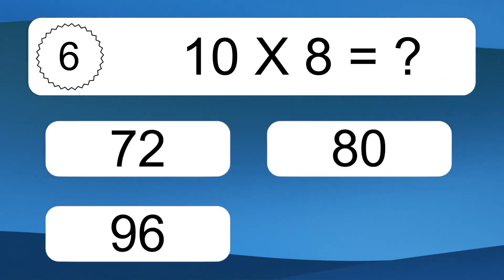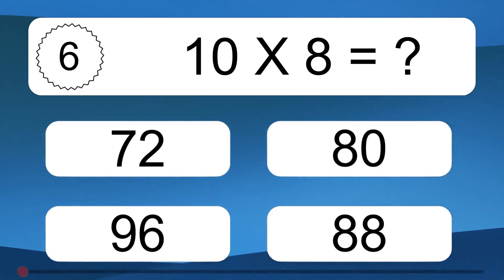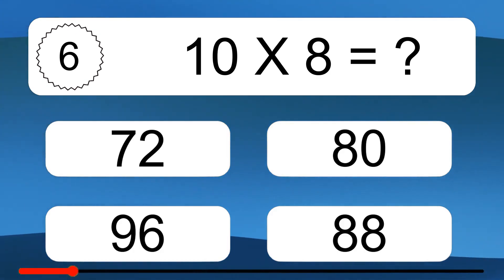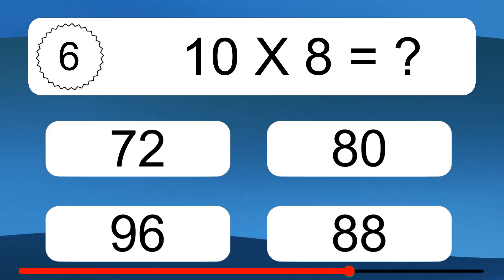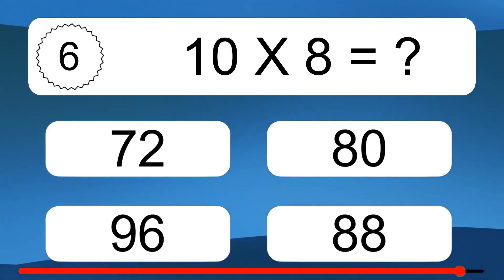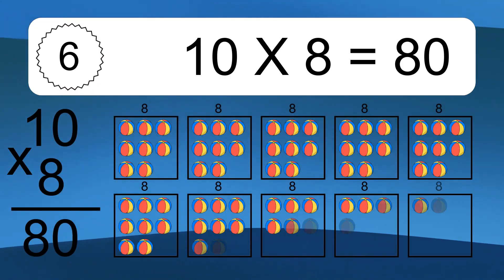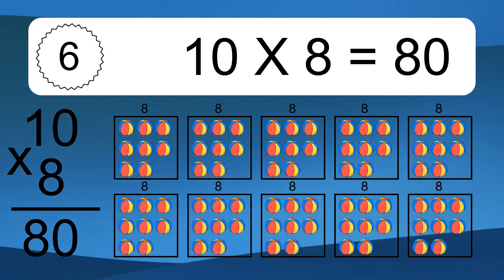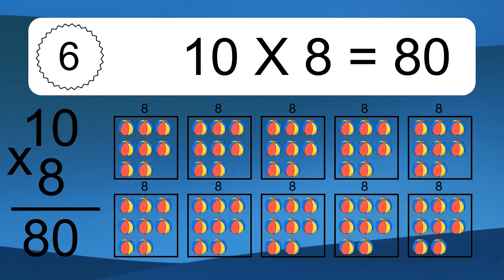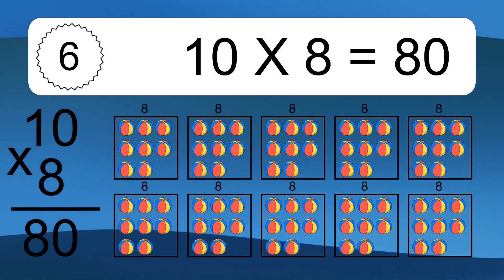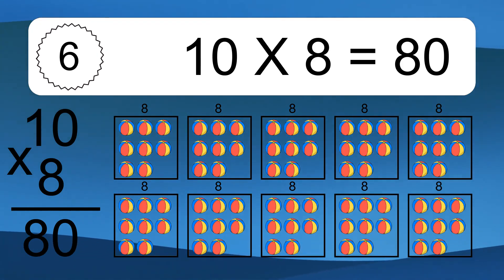10 times 8 equals what? 10 times 8 equals 80. We have 10 boxes, and each box has 8 colorful balls inside. If you count all the balls in all the boxes together, you will have 10 times 8 balls. This equals 80 balls.